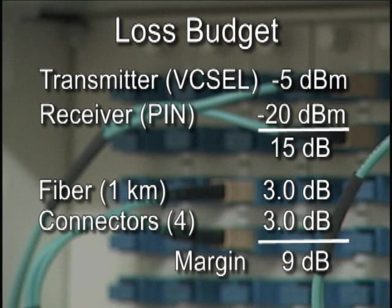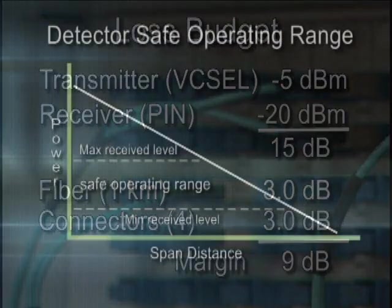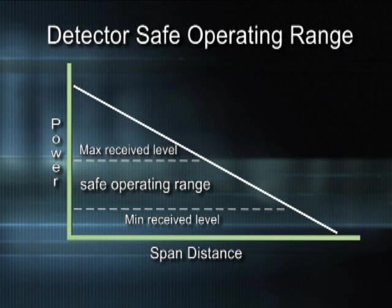The typical output power coupled into a 50/125 fiber using a VCSEL is approximately minus 5 dBm. Using a low-cost pin photodiode, we can expect a receiver sensitivity of approximately minus 20 dBm, leaving an allowed path loss value of 15 dB. Our allowed loss is much greater than the physical plant losses, so our loss budget is acceptable. A point to consider is to always check the maximum amount of light that the photodiode can handle, known as the maximum input power. If the received light level is greater than this amount, then an optical attenuator may be required.